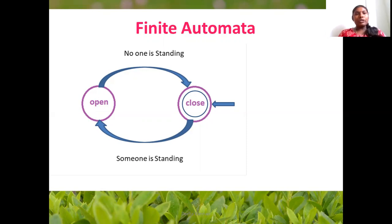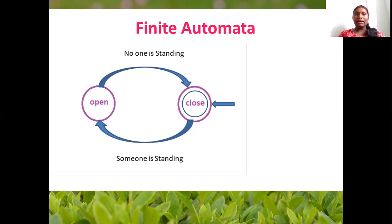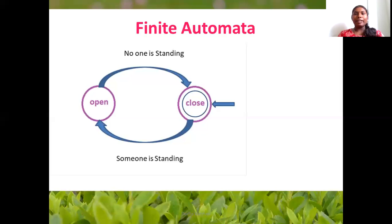In the open state, if nobody is standing, it goes to the closed state. In the closed state, if somebody is standing, it transitions back. We have two inputs: no one is standing and someone is standing. In the open state with nobody standing, it becomes closed. In the closed state, anyone standing changes the state.